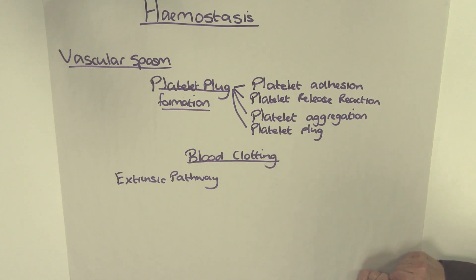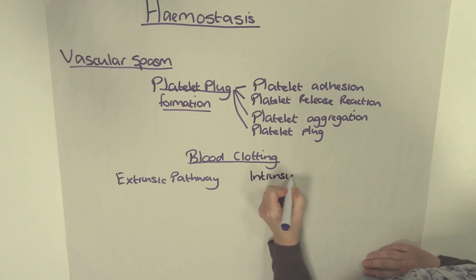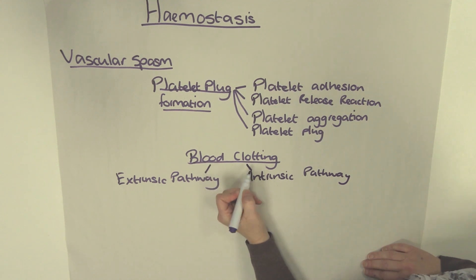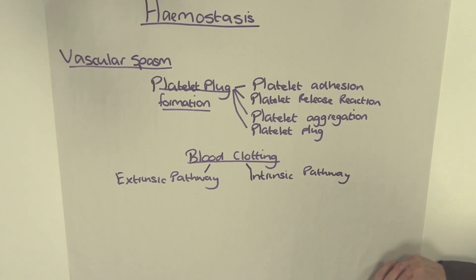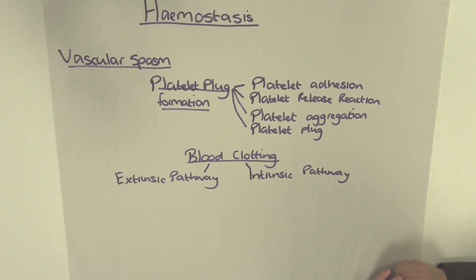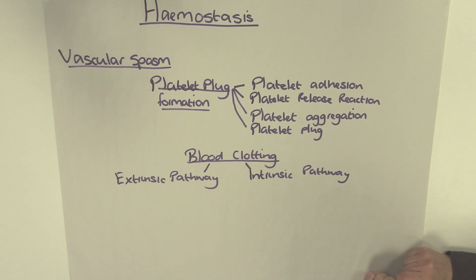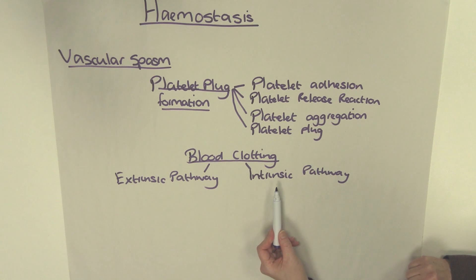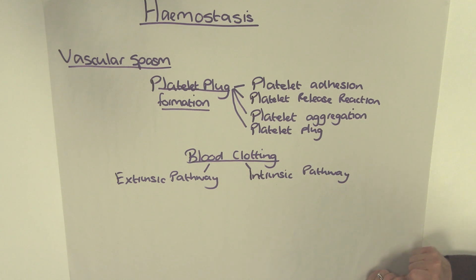The next stage in the clotting cascade is the intrinsic pathway. This is a more complex pathway than the extrinsic pathway and occurs more slowly, over several minutes. Activators are in direct contact with the blood or contained within the blood vessel — hence intrinsic, meaning inside of. Activated platelets release phospholipids. In the presence of calcium, clotting factor 12 is activated and this activates clotting factor 10. Clotting factor 10 and clotting factor 5 make prothrombinase. Both the extrinsic and intrinsic pathways result in the production of prothrombinase, and from here the clotting cascade follows the common pathway.